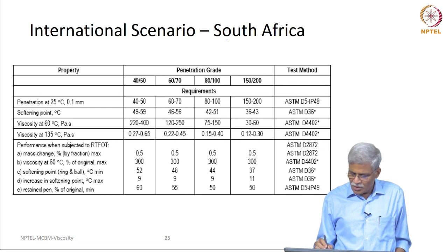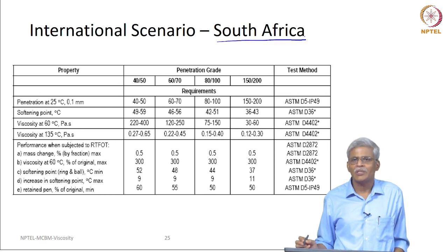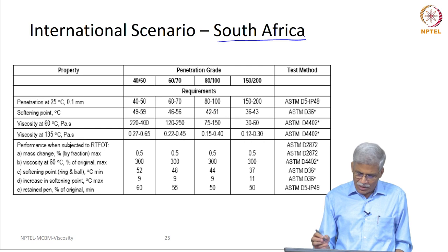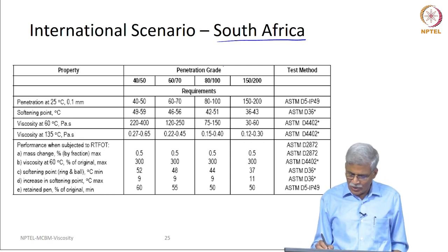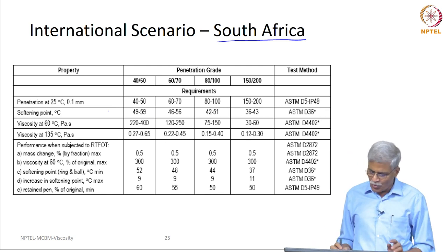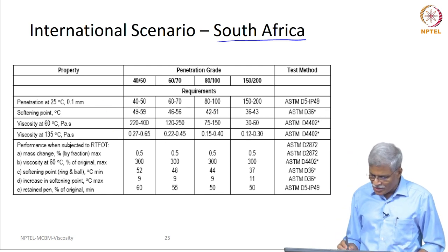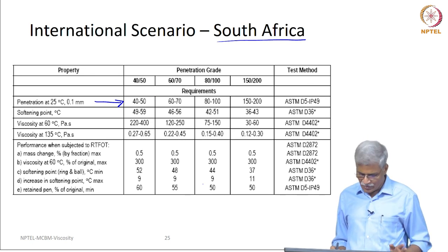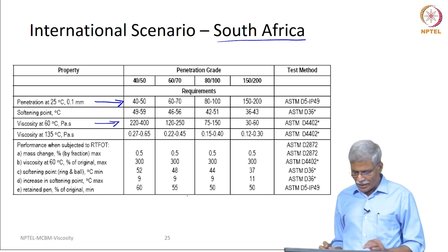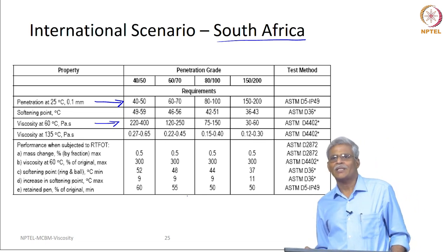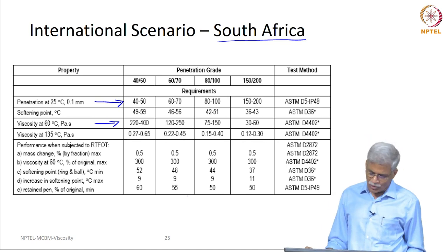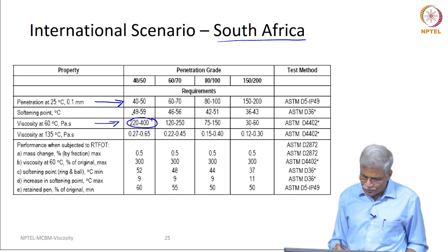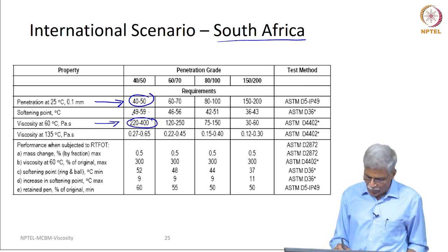In my opinion, this is by far one of the most rigorous specifications one can have — and this is the South African specification. Let us take a look at this penetration grade. Although they call it based on penetration grade, everything here is bounded. Please take a close look: the penetration at 25 degree centigrade is 40 to 50. Then look at viscosity at 60 degree centigrade — this is 220 to 400 Pascal seconds, or if you use IS 73, it is 2200 to 4000 poise. Not only is the viscosity bounded, the penetration is also bounded, and the softening point is also bounded.